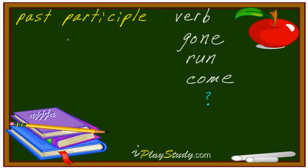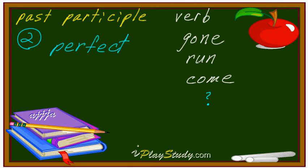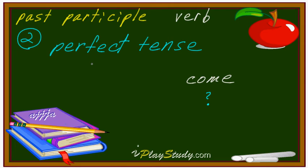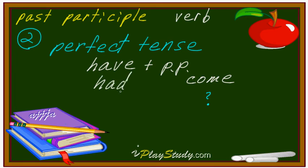I'll give you a complete answer. Very simple — only two different places. So, one: perfect tense. The formula looks like this: have plus PP — past participle. Have can also be had. Had is possible — that's the past perfect. Have plus PP is present perfect.